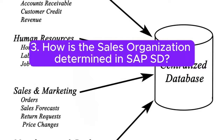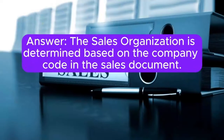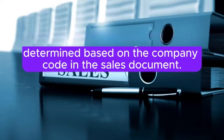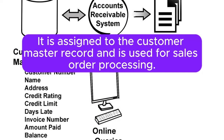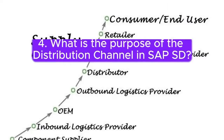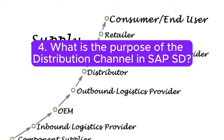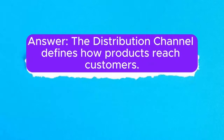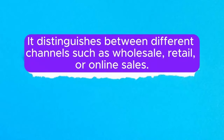Question 3: How is the sales organization determined in SAP SD? Answer: The sales organization is determined based on the company code in the sales document. It is assigned to the customer master record and is used for sales order processing. Question 4: What is the purpose of the distribution channel in SAP SD? Answer: The distribution channel defines how products reach customers. It distinguishes between different channels such as wholesale, retail, or online sales.